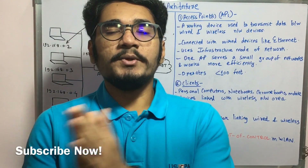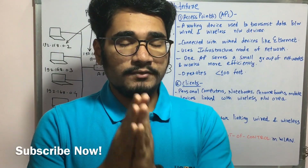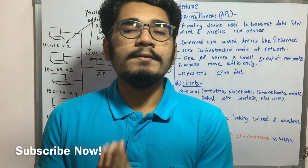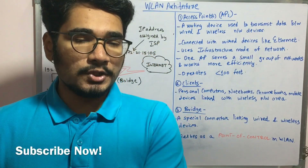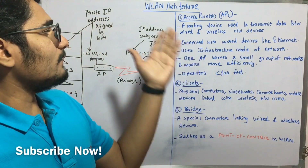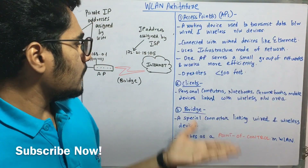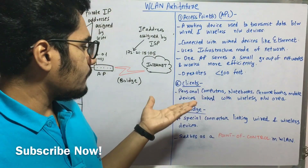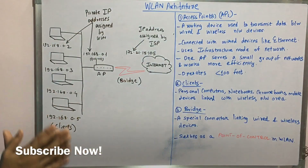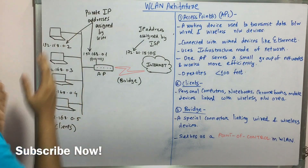Hey guys, welcome back to my channel. So today in this video, we'll see the architecture of the wireless local area network, that is WLAN. There are three major components which comprise the WLAN: we have the access point or access points (APs), then you have the clients, and then you have the bridge. This is how the architecture of a typical WLAN looks like.